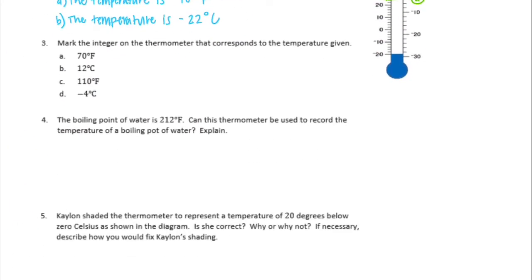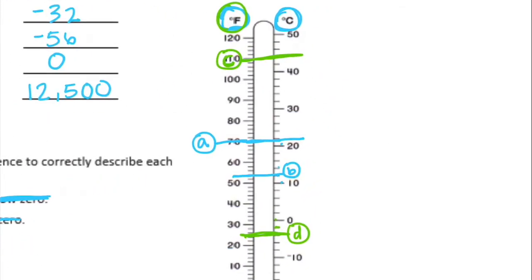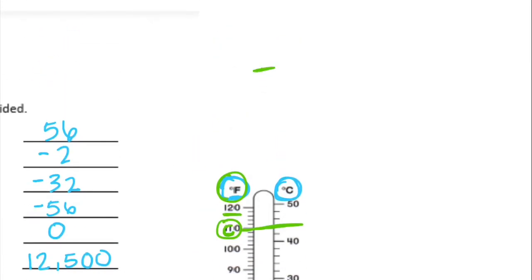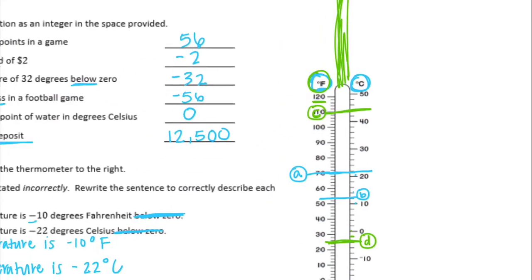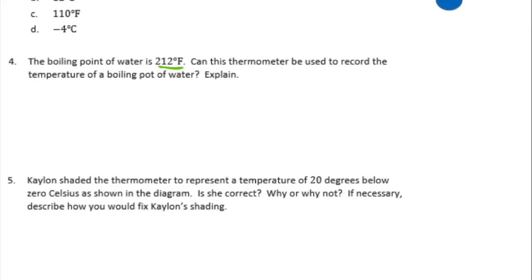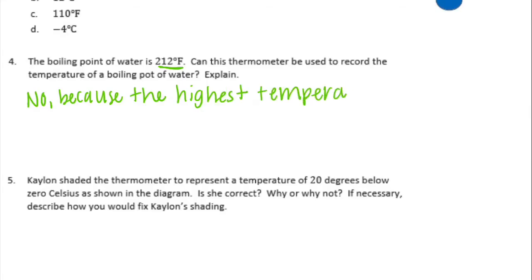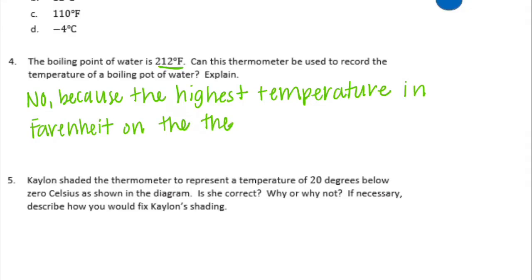Number four: the boiling point of water is 212 degrees Fahrenheit. Can this thermometer be used to record the temperature of a boiling pot of water? If we look at the thermometer, the highest it goes is 120 degrees Fahrenheit. We can't label 212 because it would be way above the top. So the answer is no — the highest temperature in Fahrenheit on the thermometer is 120 degrees.